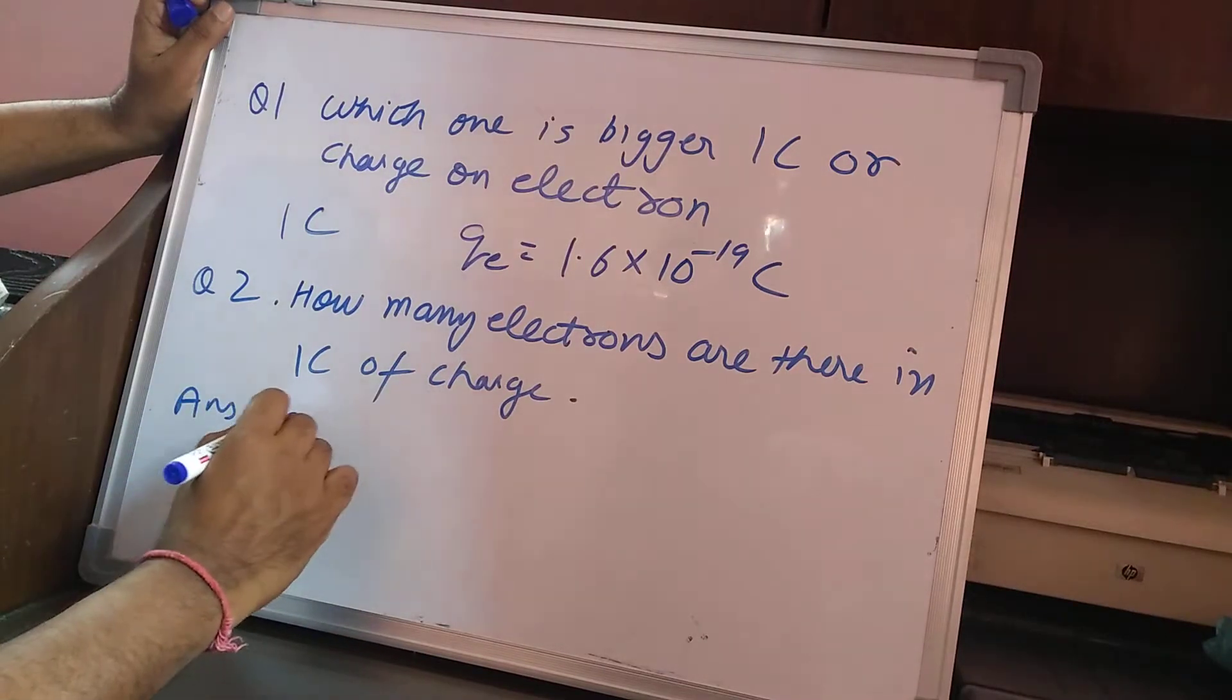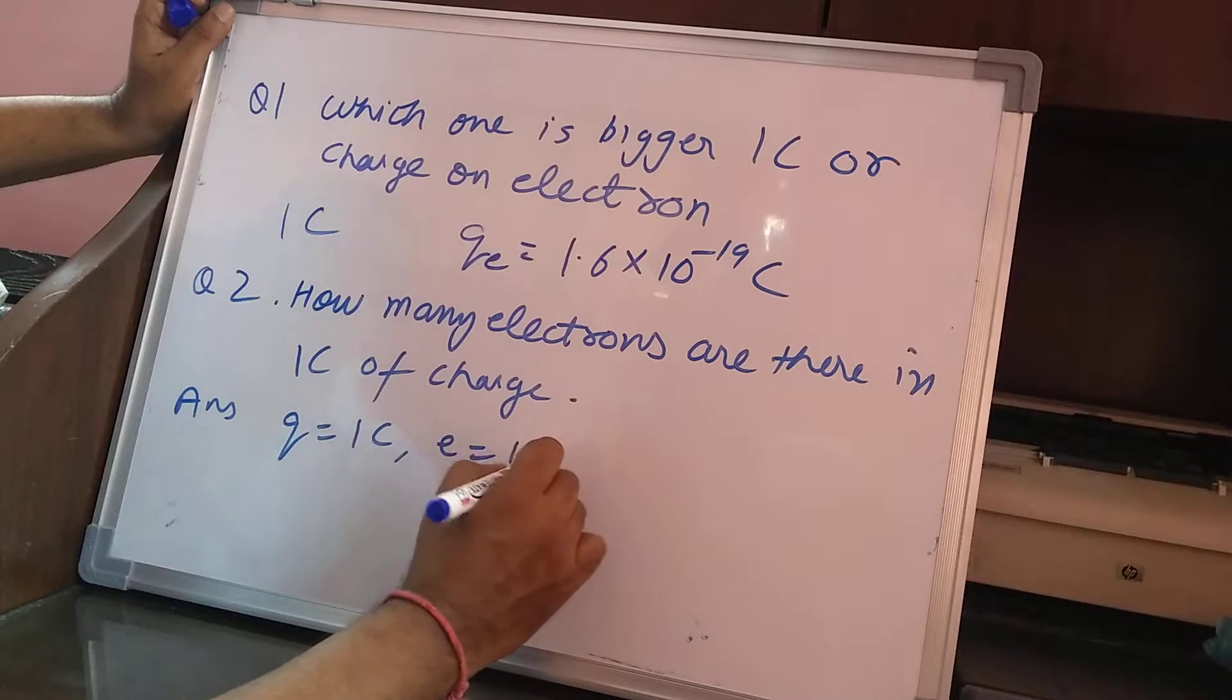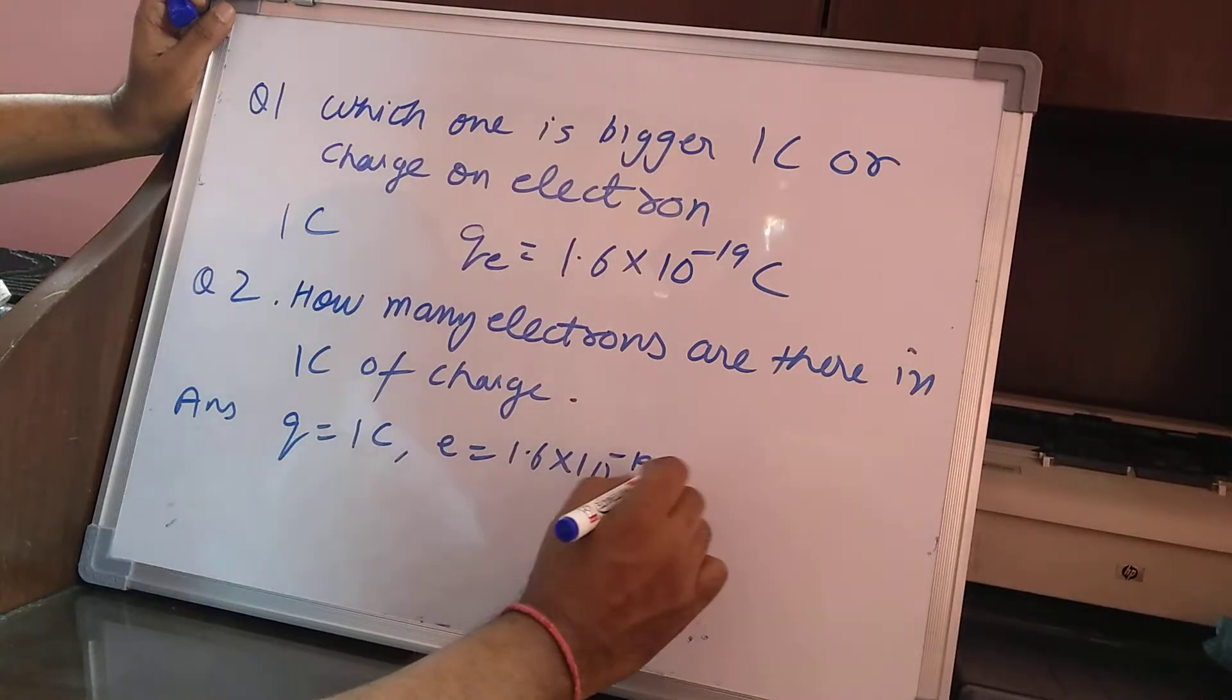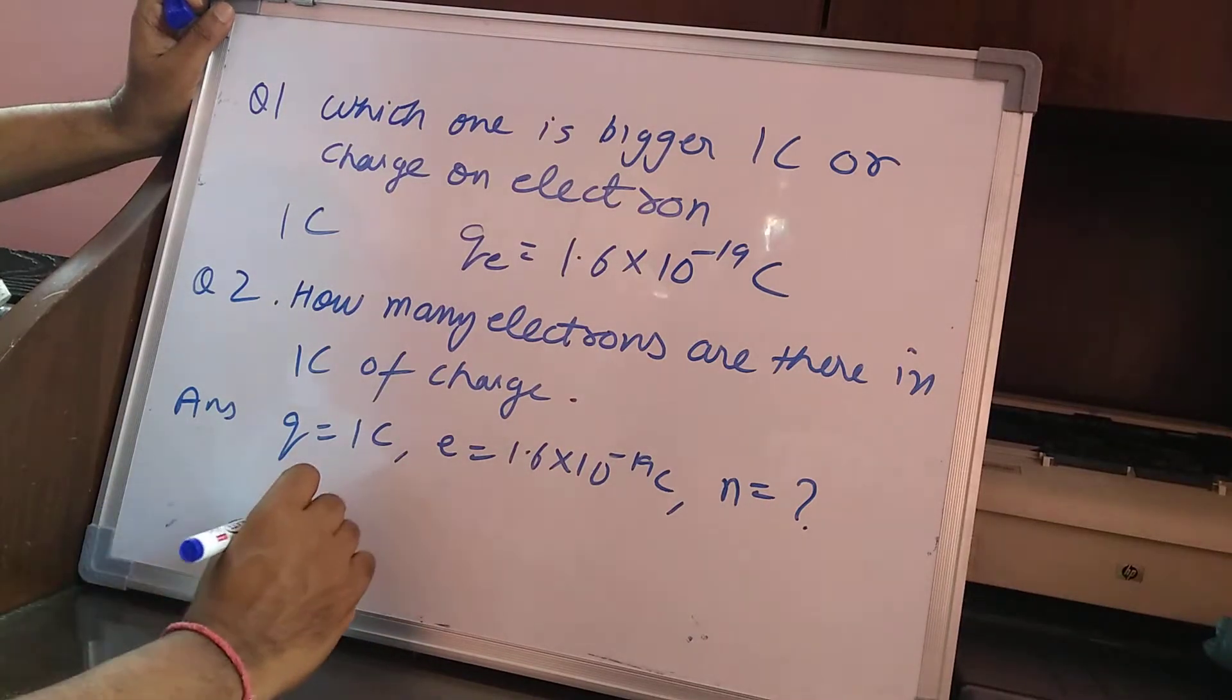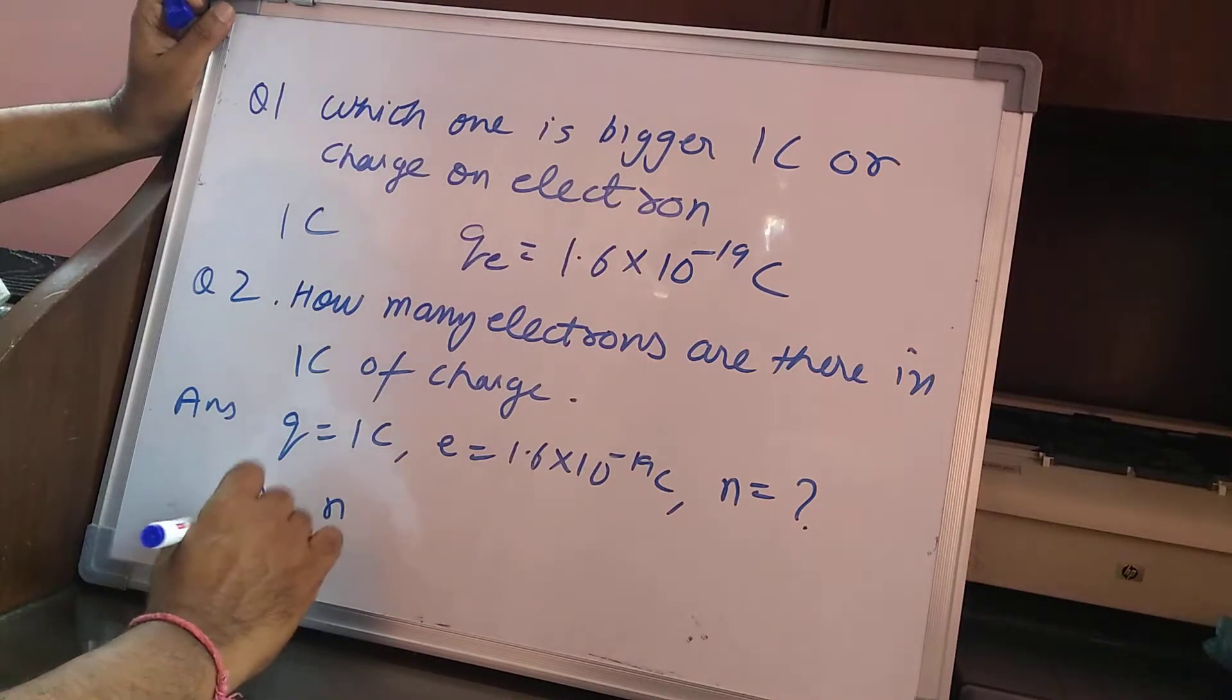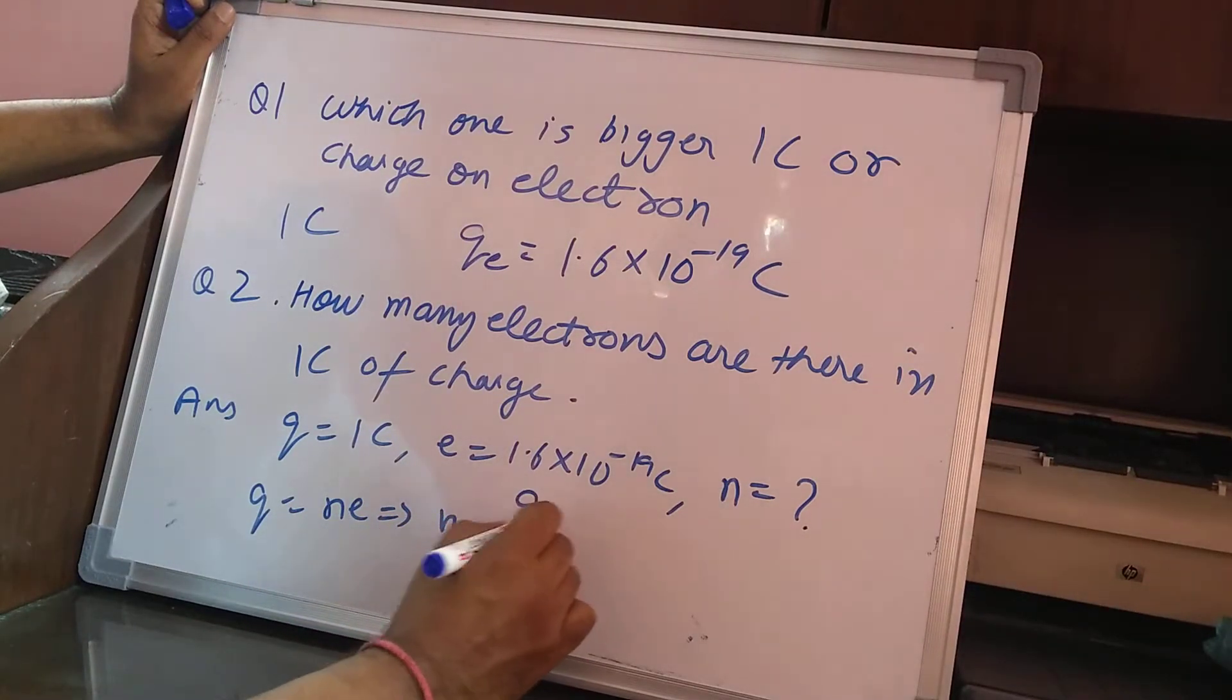So in this type of question, Q is given as one coulomb. E you already know is 1.6 into 10 raised to the power of minus 19 coulomb. What they have asked you is to calculate the value of N. So you already know that Q is equal to NE, which implies that N will be equal to Q divided by E.